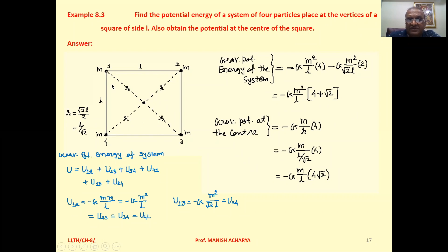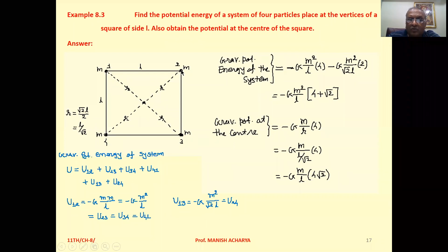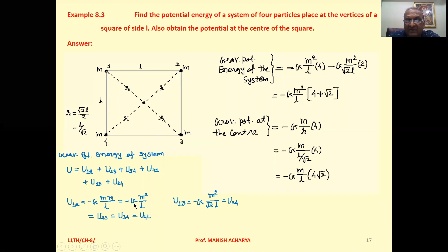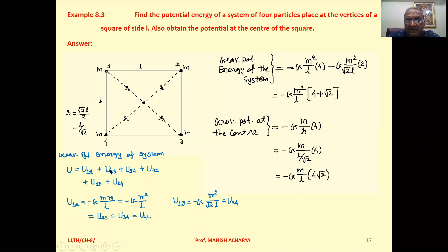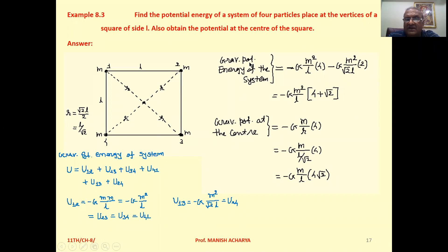Now the potential energy of pairs 1,2, 2,3, 3,4 and 4,1 will be the same, that is minus G m squared by L. So for these four pairs, the gravitational potential energy of the system equals minus G m squared by L multiplied by 4.